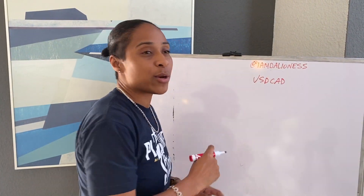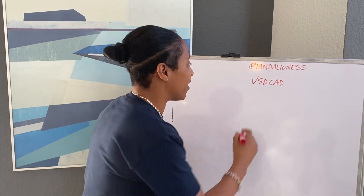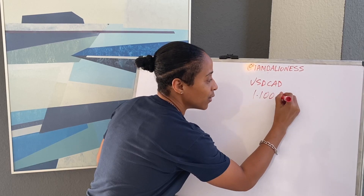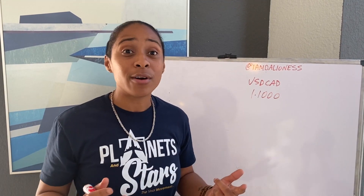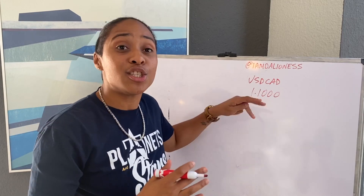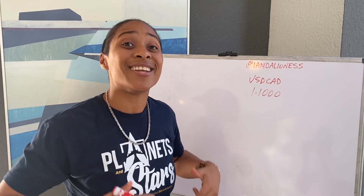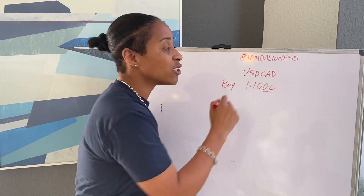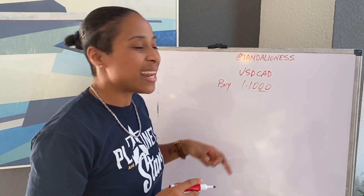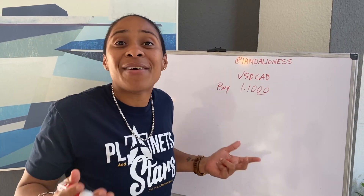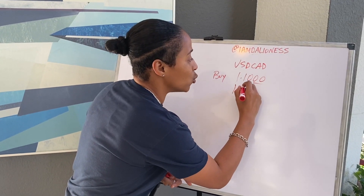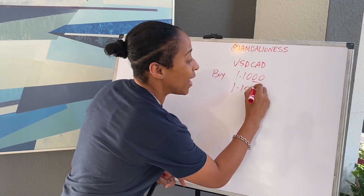There's something called an exchange rate and this fluctuates every single day, all day long. Let's just say the exchange rate when you arrive in Canada is 1.1000. Now this can change every minute, every hour, every 24 hours — just know that it's changing constantly. Let's say you're able to buy the US dollar at this exchange rate and let's say five hours later the exchange rate fluctuates and it goes up.